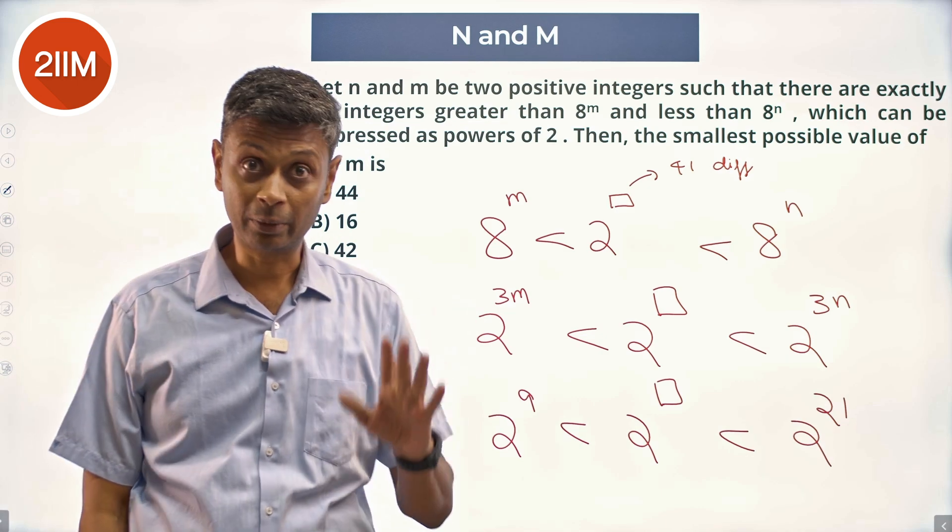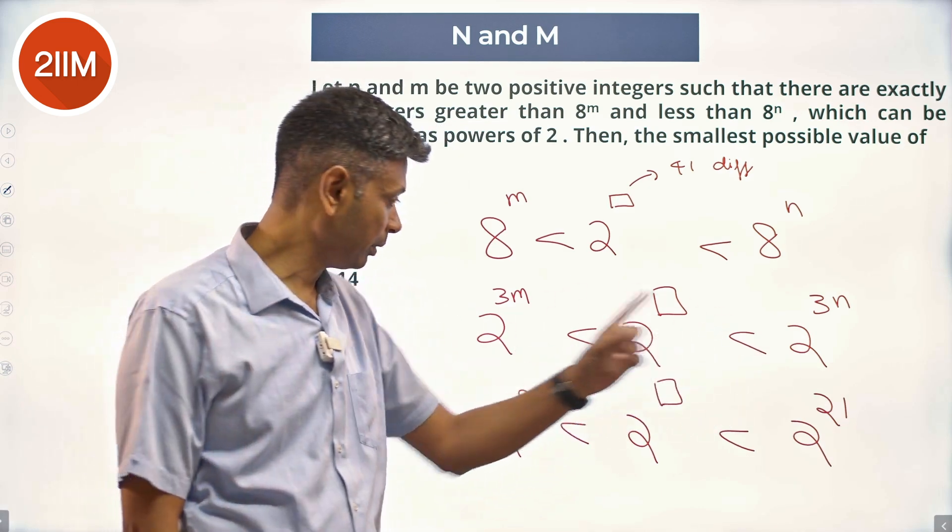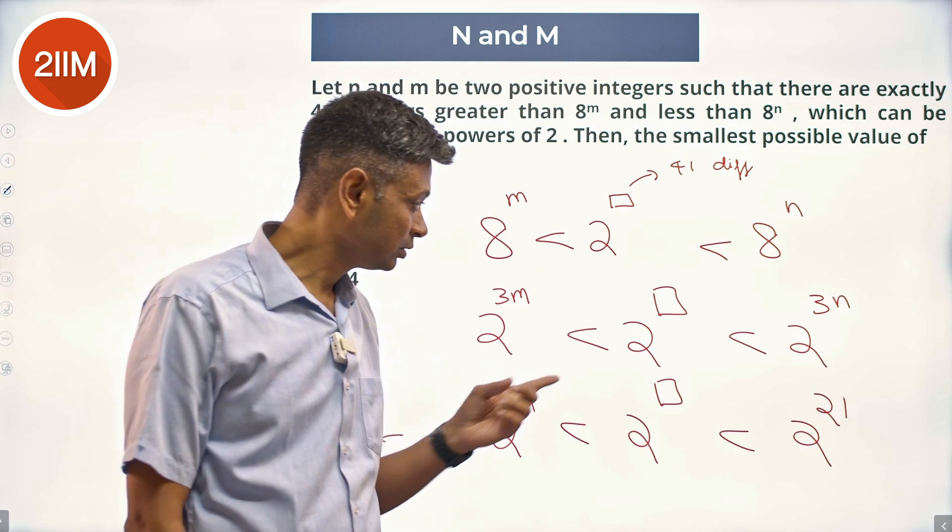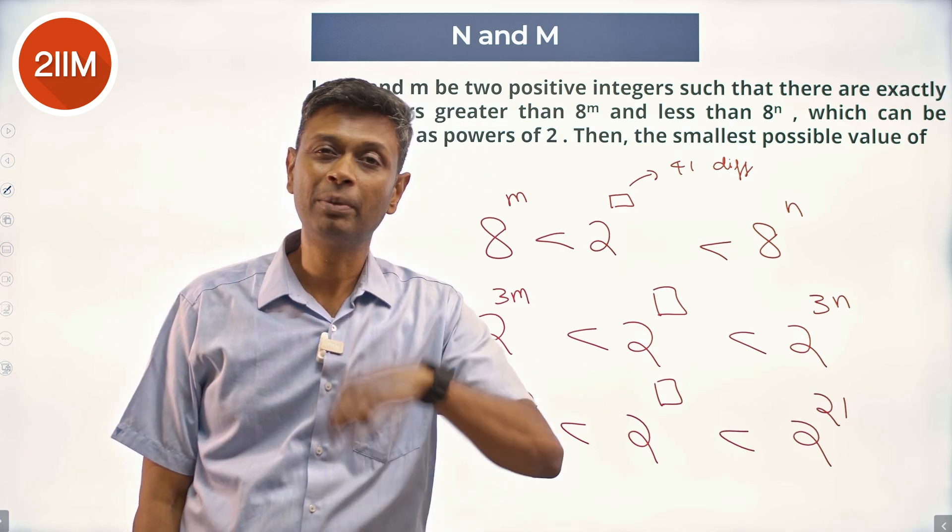10, 11, 12, through 21. 21 minus 9 is 12. There cannot be 12 different values; there can be 11 different values.